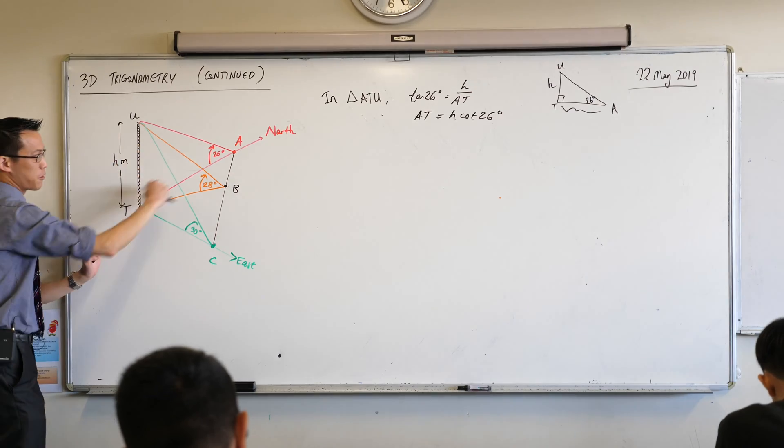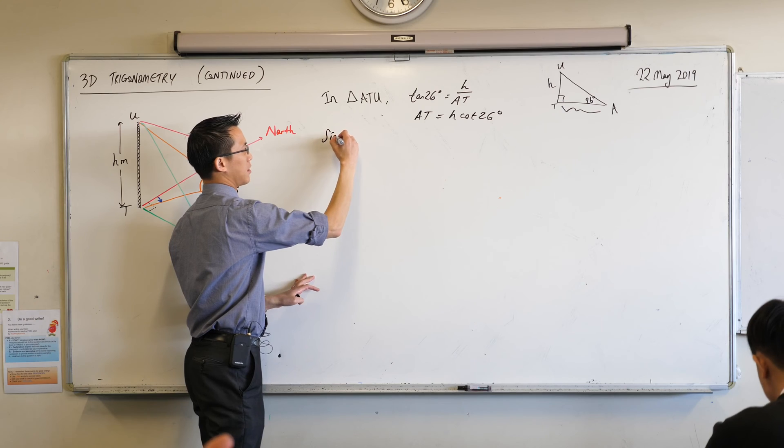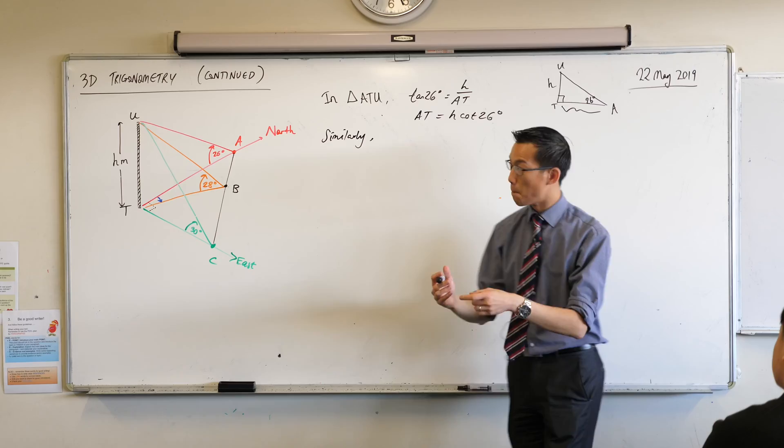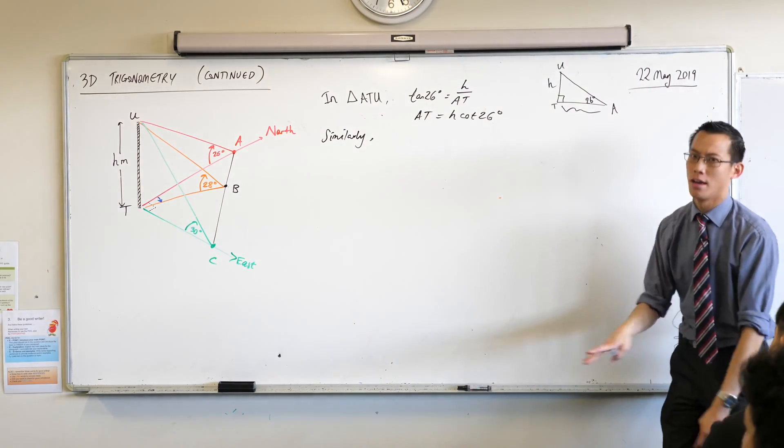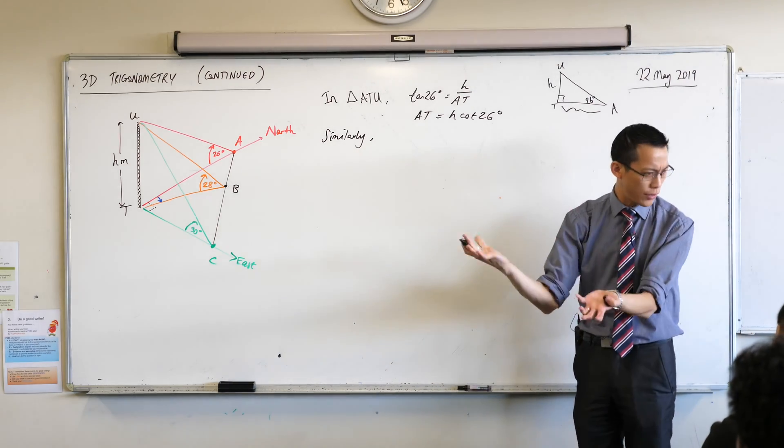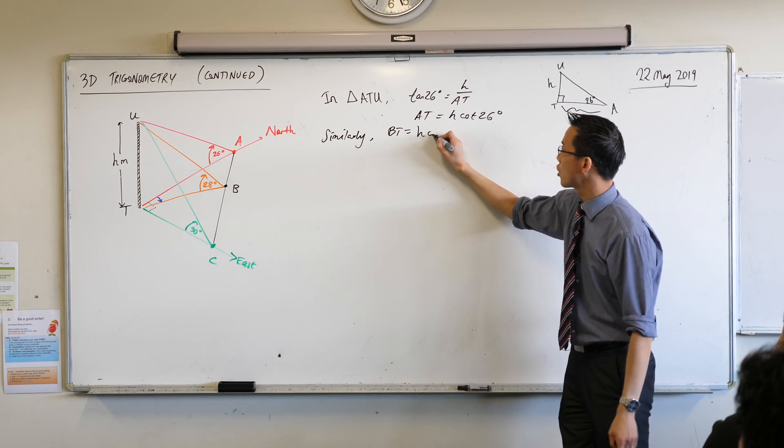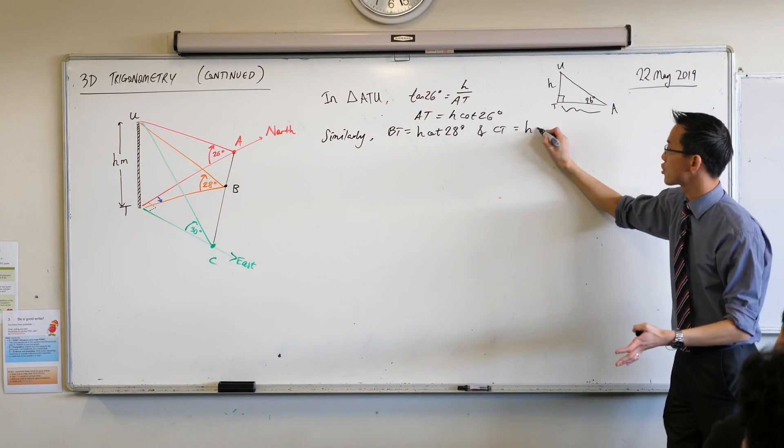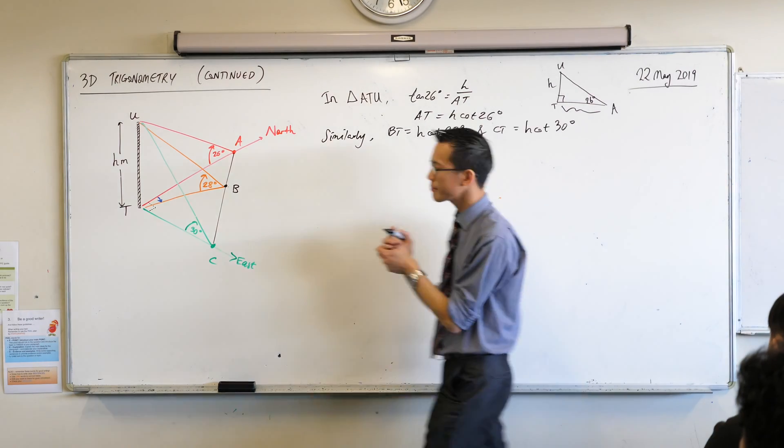Now because this is a right angle triangle and I've got the same right angle triangles for B and for C, I'm going to say similarly I can write expressions for BT, that's from B along the ground to the tower, and CT from C along the ground to the tower. I can write them. They're going to look exactly like this because the triangles are all configured in the same way. They're just slightly different sizes. So BT is going to be H cot, not 26, it's 28. Thank you very much. And CT is going to be H cot 30 degrees. Don't forget the degrees because we know different units.